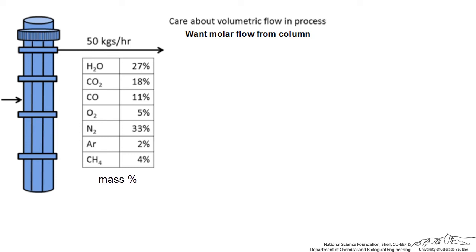Here we are given a column and a composition of gases leaving the column. If we were interested in the total volumetric flow out of this column for processes downstream, then we would need to calculate the molar flow from the column. To do that we can either calculate the moles of each species and then the total amount of moles leaving the column, or we could calculate an average molecular weight.